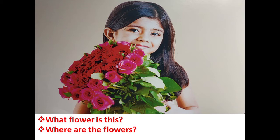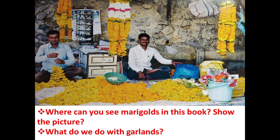Now moving to the next page. Look at this picture carefully. First question: where can you see marigolds in this book? Now children, you have the book with you. I want you to open the book, find the picture of the flower marigold, and show that picture to the person who is assisting you.